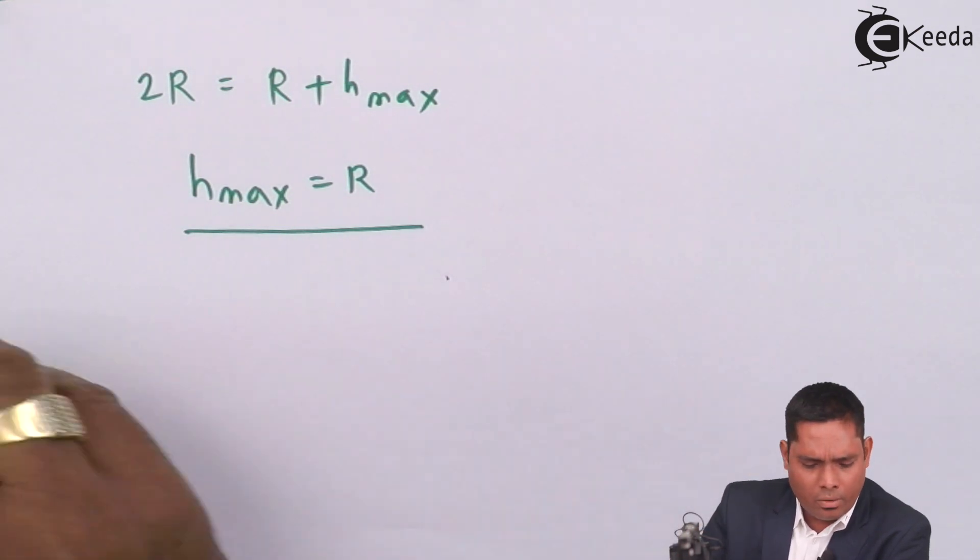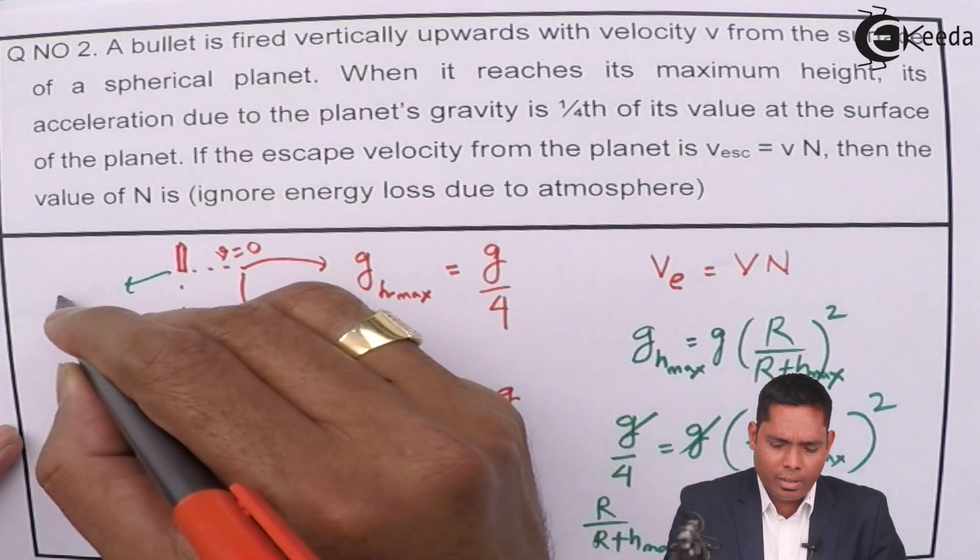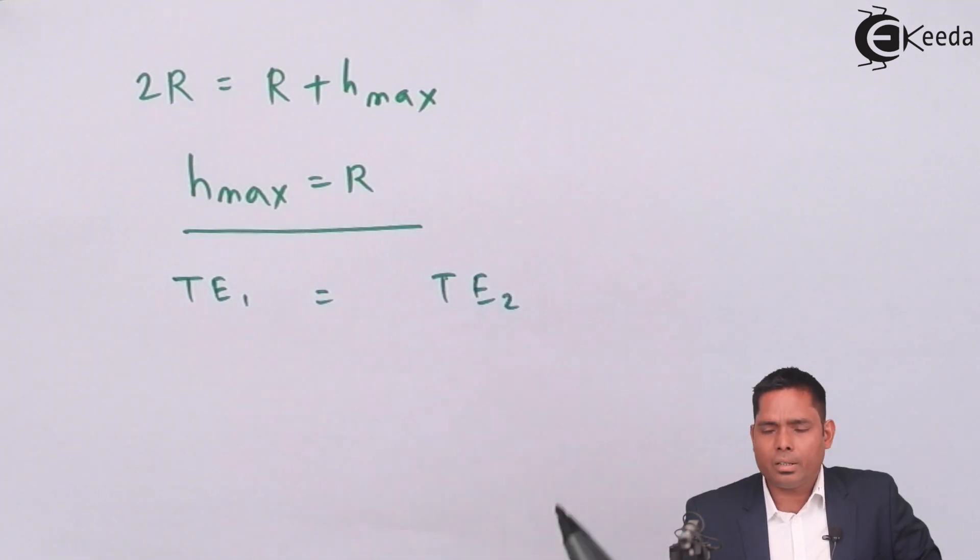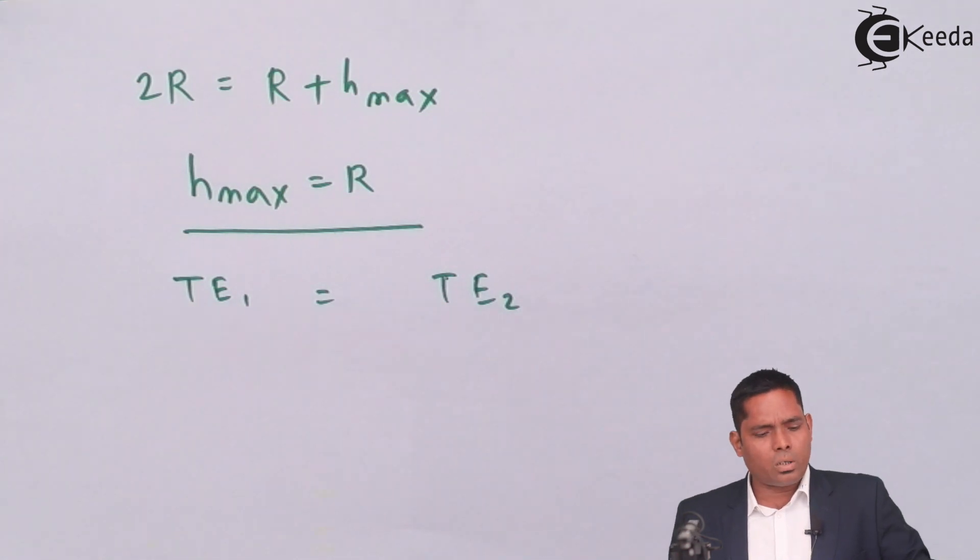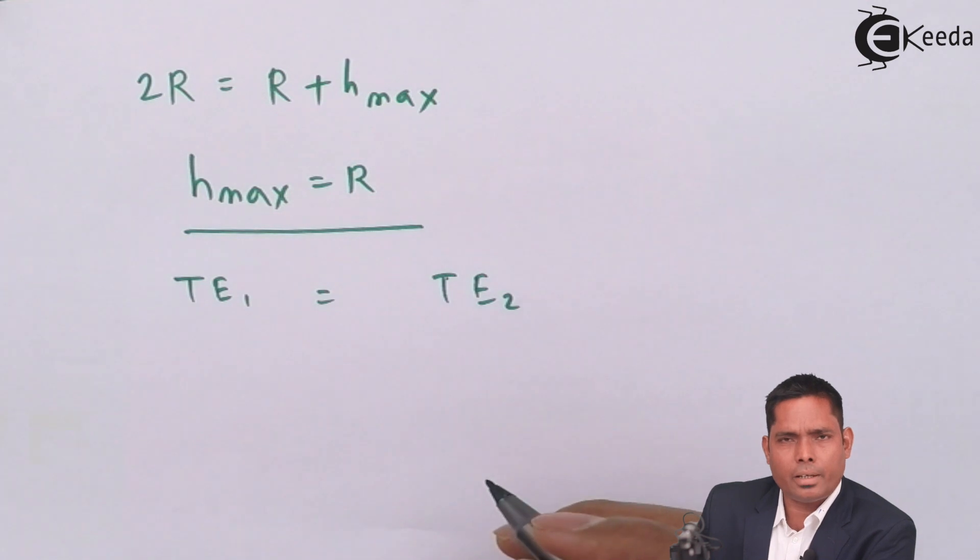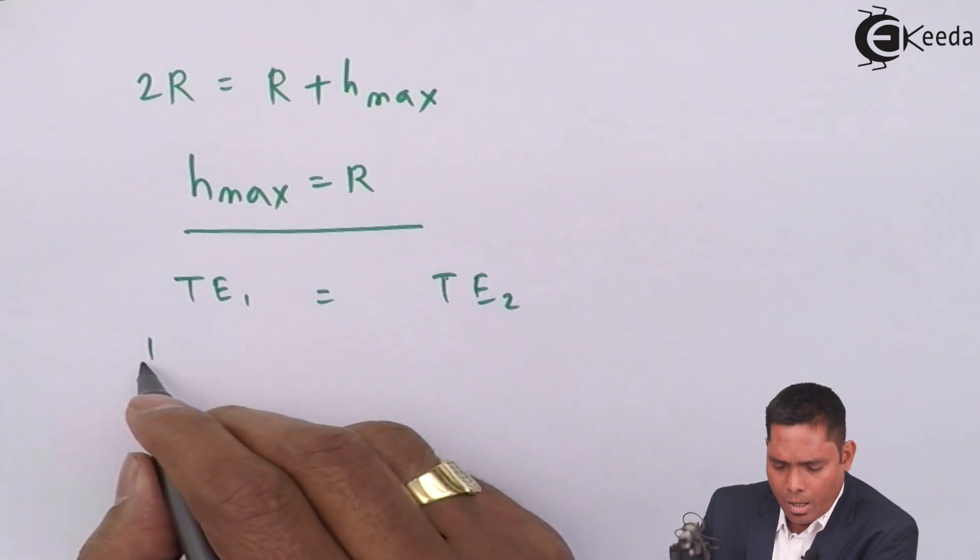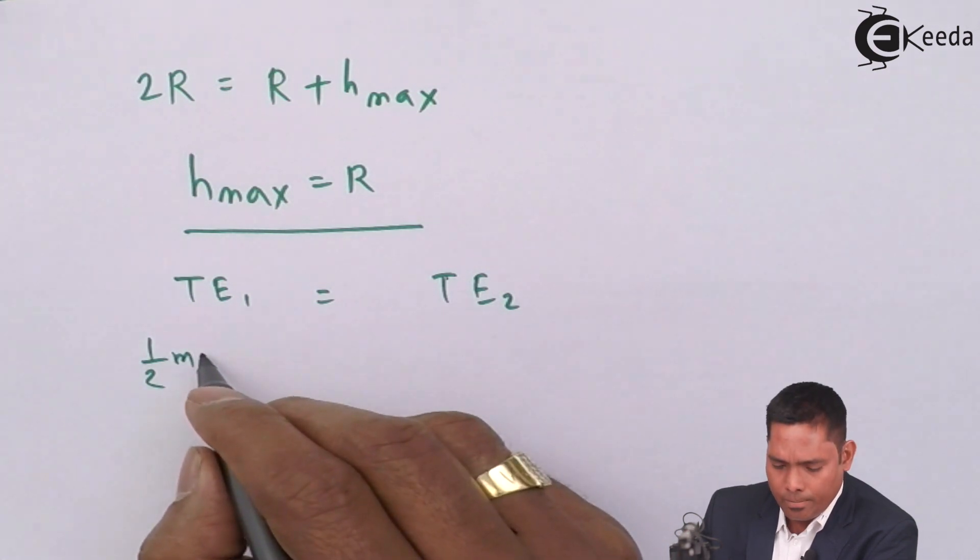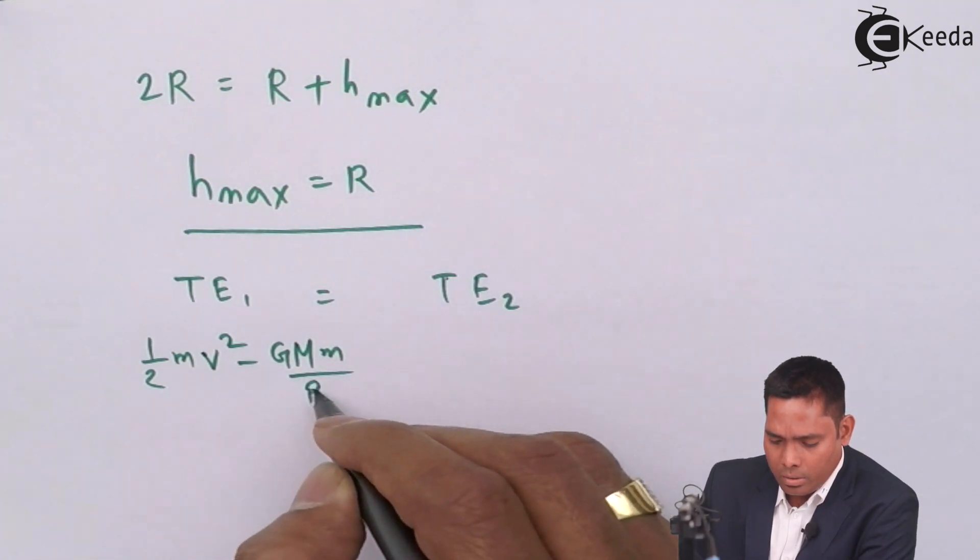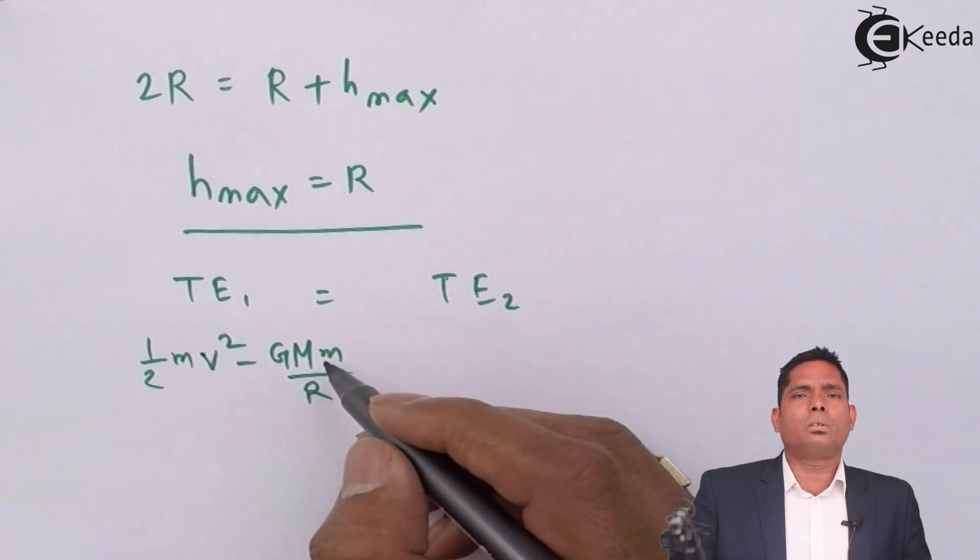I will equate the total energy in the first case and second case. From the starting point to the final destination, total energy must be equal. We ignore energy loss due to atmosphere or air resistance, so air resistance is neglected. Total energy at the beginning is the sum of kinetic energy and potential energy. The kinetic energy is (1/2)mv² and minus GMm/R is the potential energy, where M is the mass of the planet and m is the mass of the bullet.